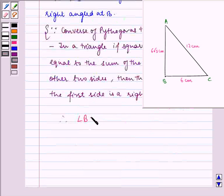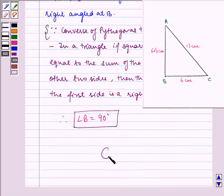Therefore, angle B is equal to 90°. This is our required answer. Hence, the correct option is C. I hope you understood the question. Bye and have a nice day.